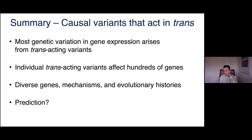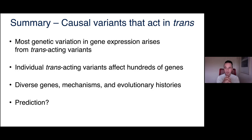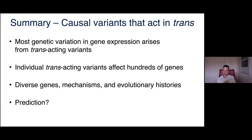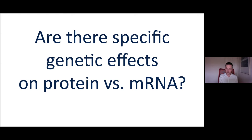The takeaway from Sheila's work is one of variation and diversity. Trans-acting variants are found all over the genome, dominate gene expression variation, cluster in hotspot regions, and the mechanisms creating hotspots can really be many different things — not just TF coding variants. That raises the question of how predictive we can become. We don't have enough dissected yet, but this is an area of active focus.